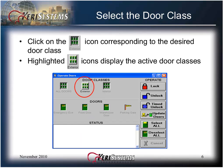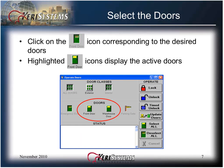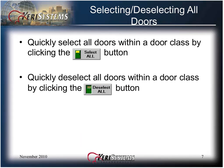Click on the icon corresponding to the desired door class. Highlighted icons display the active door classes. Click on the icon corresponding to the desired doors. The highlighted door icons display the active doors. Selecting and deselecting all doors can be done quickly within a door class by clicking the Select All button. Quickly deselect all the doors within the class by clicking the Deselect All button.